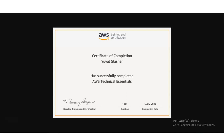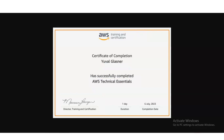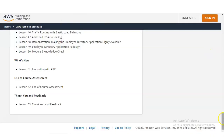You will get this type of certificate. On the top you can see the logo of AWS, then your name will be given, and then the topic name — that is AWS Technical Essentials. It is signed by the Director of Training and Certification of AWS. The completion date is also given on the certificate.